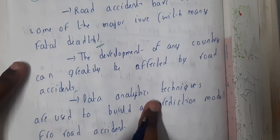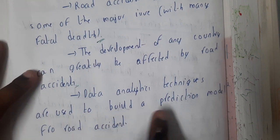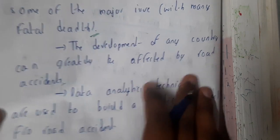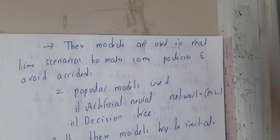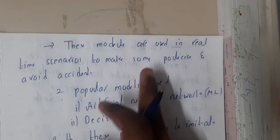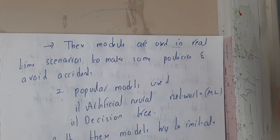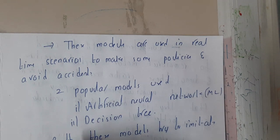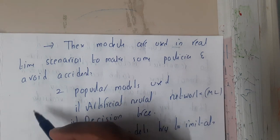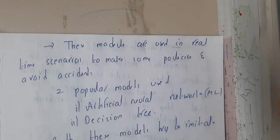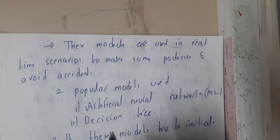Data analytics techniques are used to build a prediction model for road accidents. The model is used in real-time scenarios to make policies and avoid accidents. For example, in Tesla, the autopilot feature ensures the car won't collide with other vehicles when in autopilot mode — this is a practical application of such predictive systems.